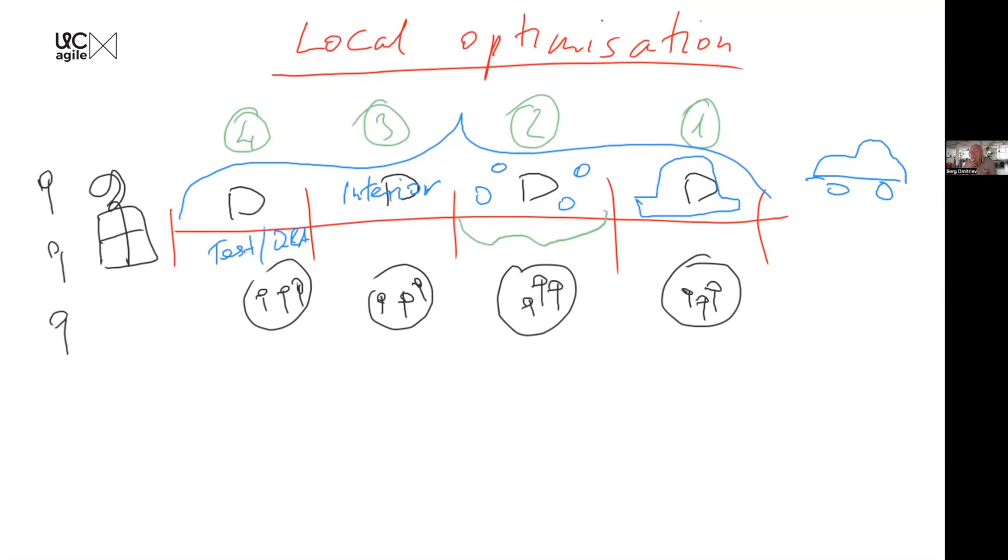So imagine if I start telling the guys at stage number two, 'Guys, speed is everything, right? Speed. You need to be fast. You need to put these wheels goddamn fast.' And we will pay bonuses. So every team has a king, and this king is a person who is in charge, like a chief of this department or head of this department.